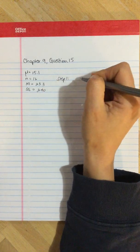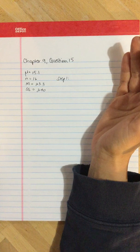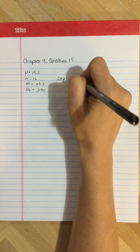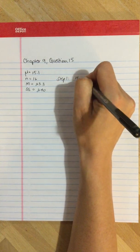Step one of the hypothesis testing procedure is to state our hypotheses. To do this, we need to know it asks for a two-tailed test, so we need to have our null and our alternate. These two need to be mutually exclusive and exhaustive.